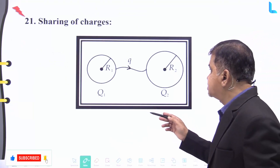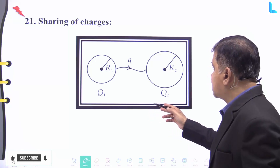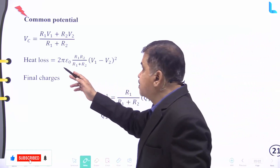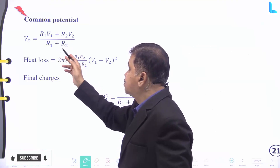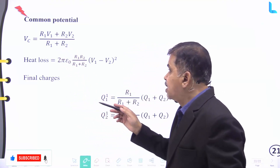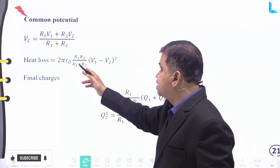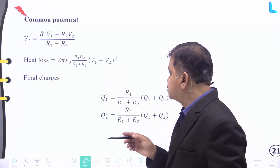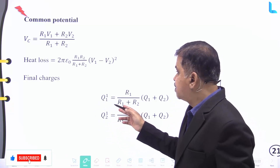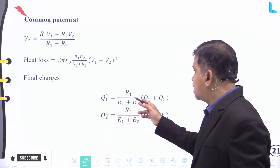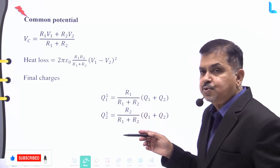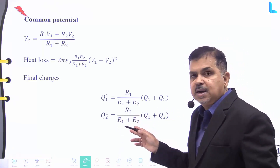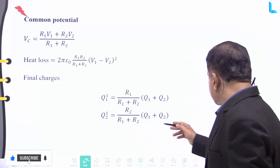Number twenty-one — sharing of charges between spheres: the common potential is Vc = (r1·V1 + r2·V2)/(r1 + r2). The heat loss is 2πε₀·[r1·r2/(r1+r2)]·(V1−V2)². The final charges are Q1' = [r1/(r1+r2)]·(Q1+Q2) and Q2' = [r2/(r1+r2)]·(Q1+Q2).